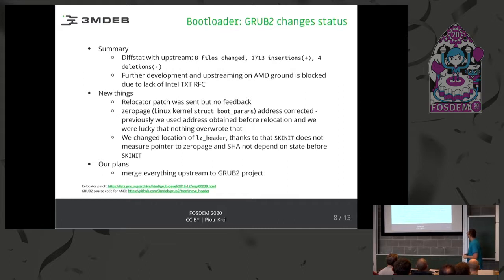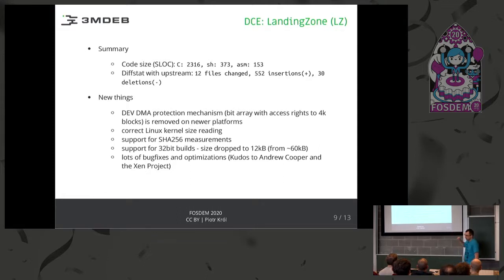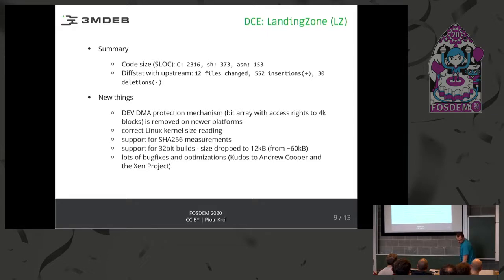We changed a number of things in GRUB and our goal is to merge everything into the upstream project. The landing zone is about 2,000 lines of code and lives on the TrenchBoot repository. This is specifically for AMD — the equivalent on the Intel side is ACM init. The landing zone is very small: for 32-bit it's about 12 kilobytes. There have been many improvements since the last presentation, and we would like to thank Kendrick Cooper and the Xen Project for supporting us. We added SHA-256 measurements so everything looks correct. After implementing DMA protection, we should be good to go and provide this to distributions.